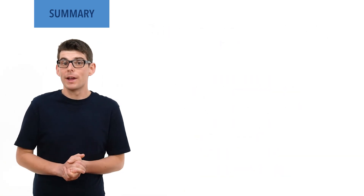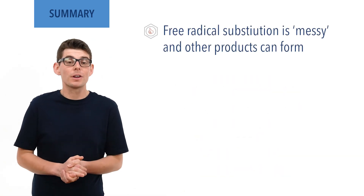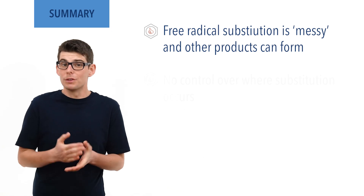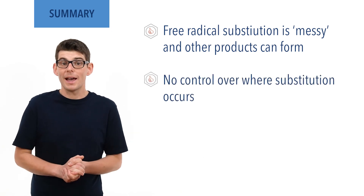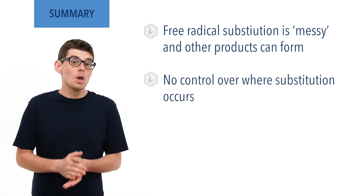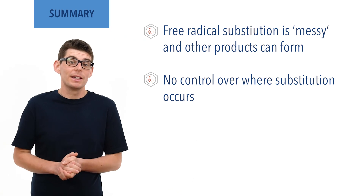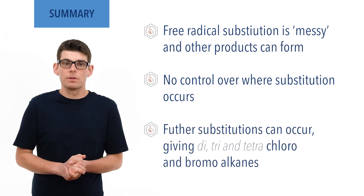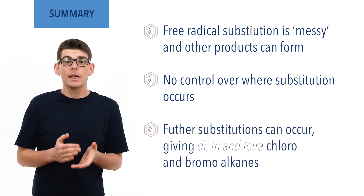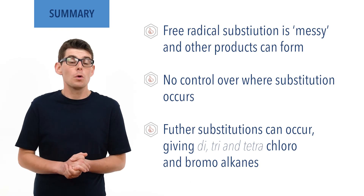Free radical reactions are messy and other products are always formed. There is no control over the position a halogen gets substituted into within the alkane, and further substitution reactions are possible, leading to di-, tri-, and tetrachloro or bromoalkanes. I hope you found this video useful. Please check out other relevant videos in the links given in the description below and visit chemistrystudent.com for free notes and revision materials.